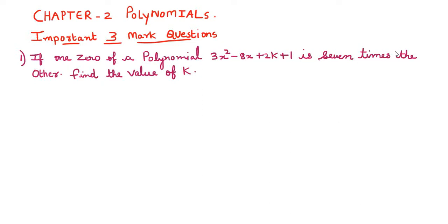In this video we will see some of the important remark questions from chapter 2 polynomials. The first question is: if one zero of a polynomial is 7 times the other, find the value of k, where the polynomial is given as 3x² minus 8x plus 2k plus 1.